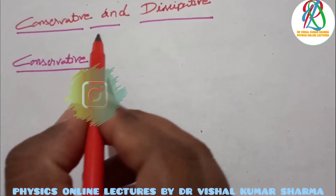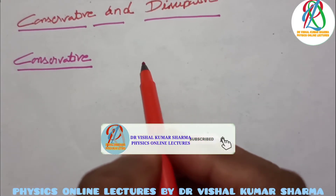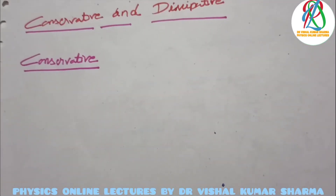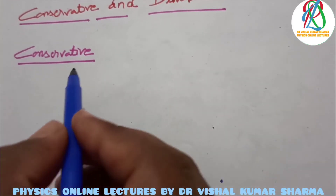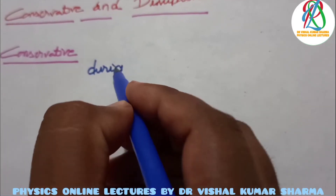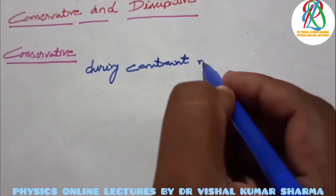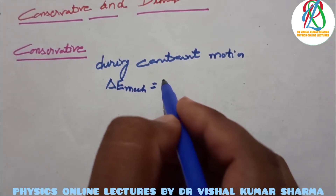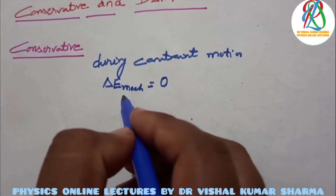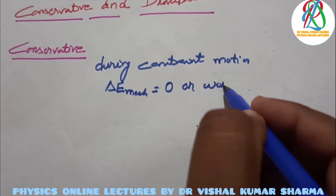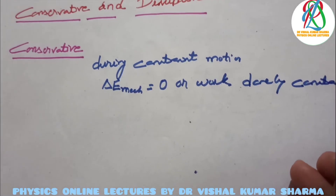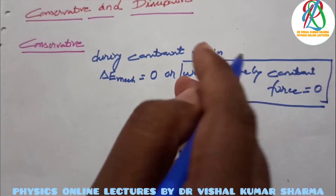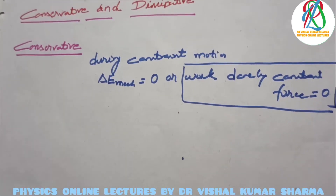In this lecture we are going to discuss conservative and dissipative constraints. For conservative constraints, the total mechanical energy of the system is conserved while performing the constrained motion. During constrained motion, the total mechanical energy delta E is conserved — meaning delta E mechanical equals zero, or equivalently, the work done by the constraint force is zero.